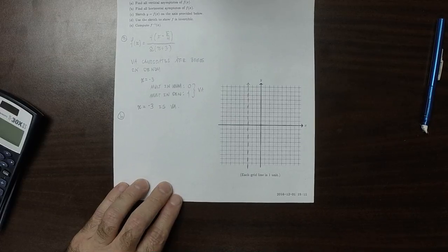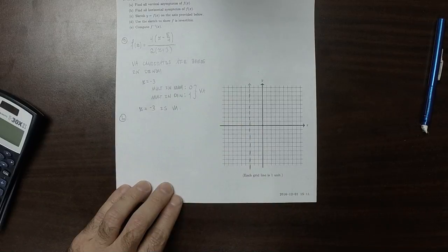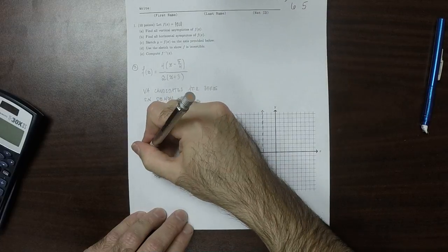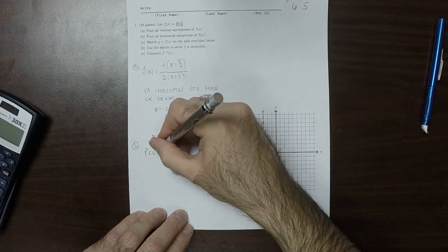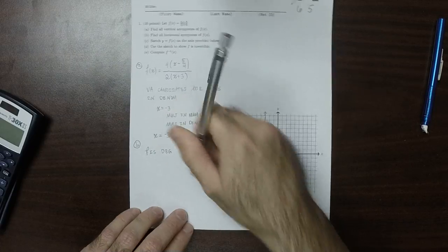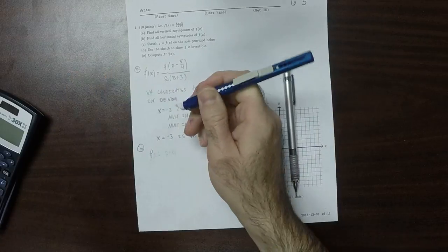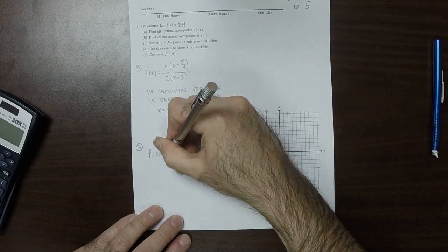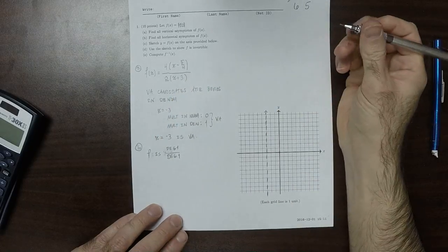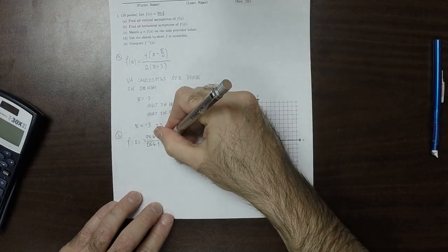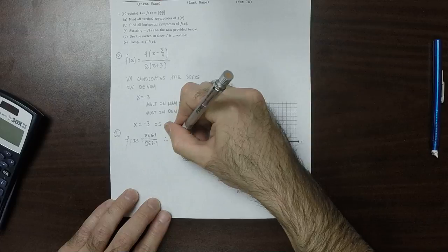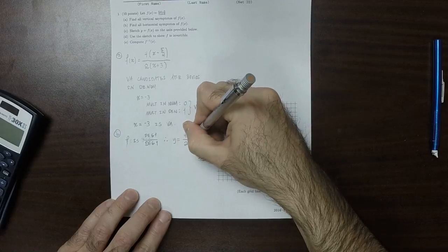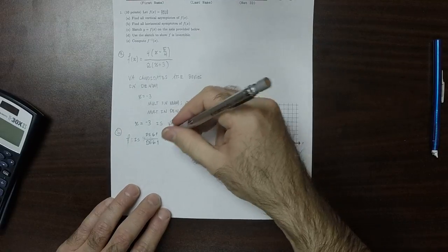B. Find all horizontal asymptotes. So now you can see that F is degree 1 over degree 1. And therefore, yes, it has a horizontal asymptote of Y is the ratio of the leading coefficients. That would be 4 over 2, which is 2. So that's a horizontal asymptote. I'll go ahead and plot that.